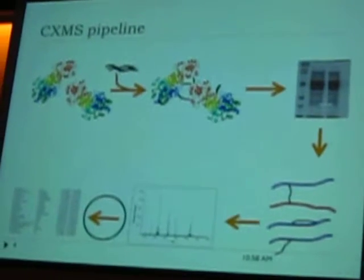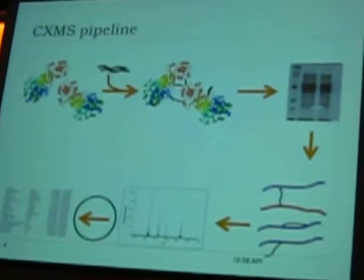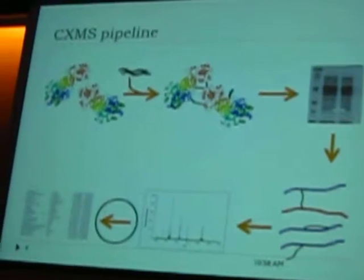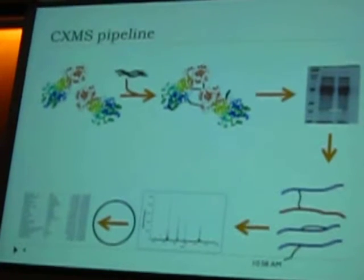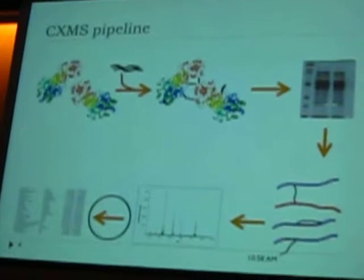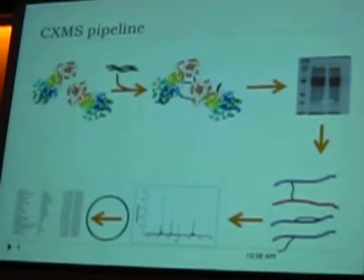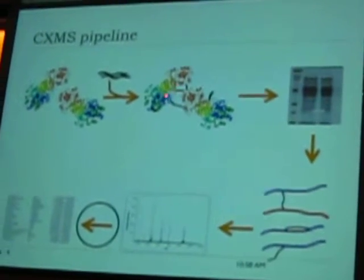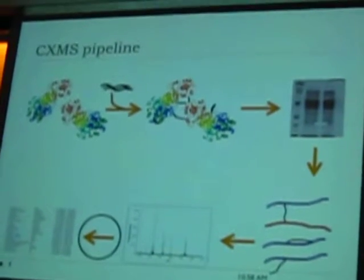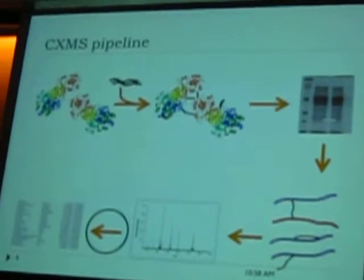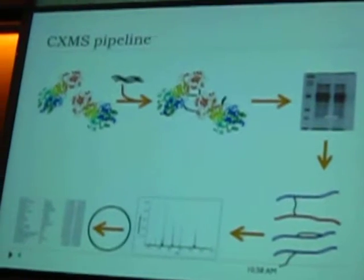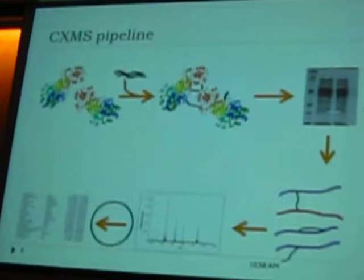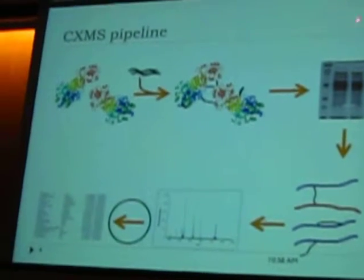What does a typical cross-linking mass spectrometry pipeline — in short, CX-MS pipeline — look like? So we have two proteins, we add the cross-linkers, and the cross-linkers react with each other, giving us certain types of cross-links, meaning a covalent bonding between the cross-linker and the protein.